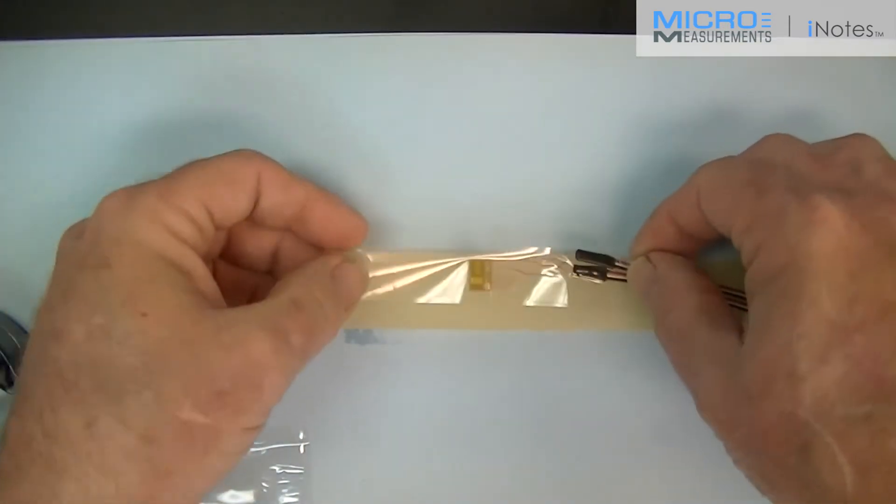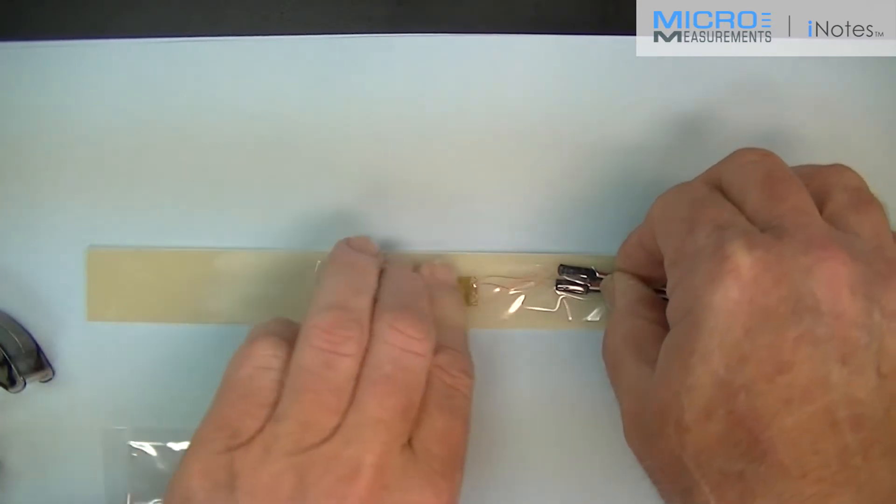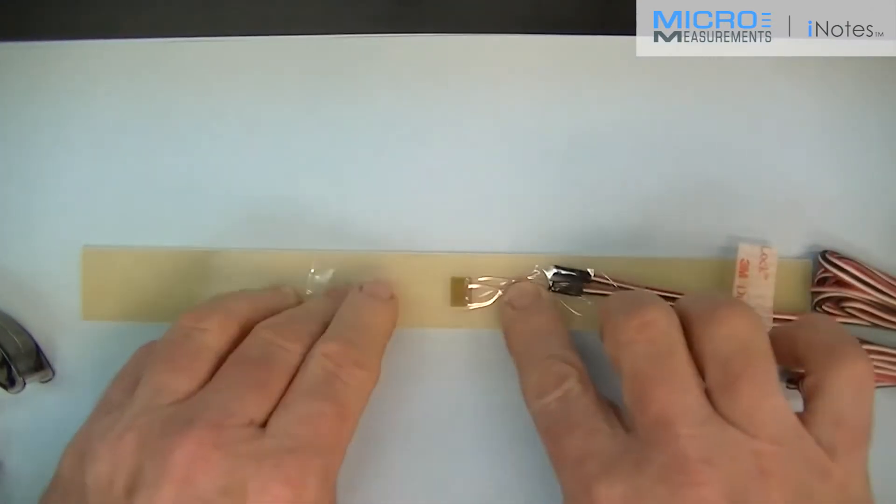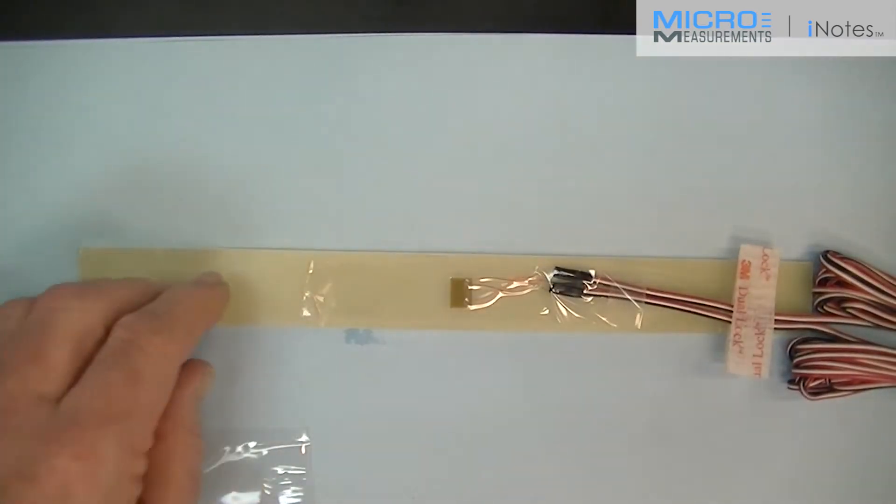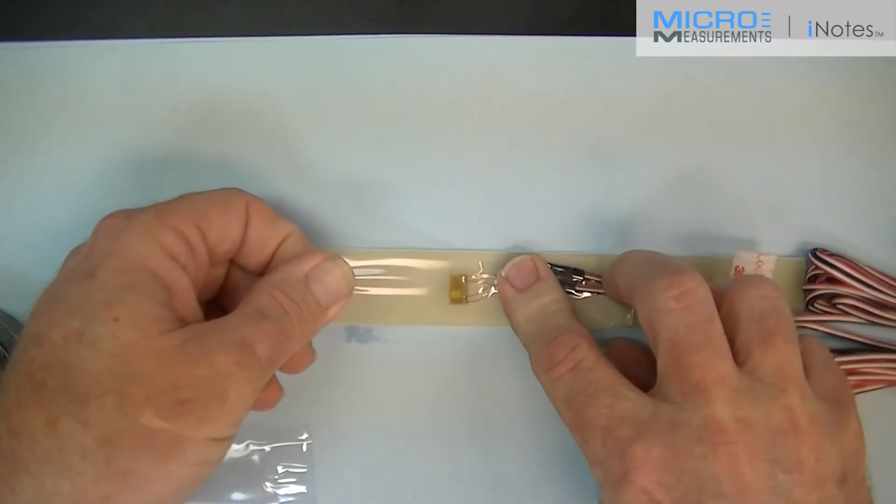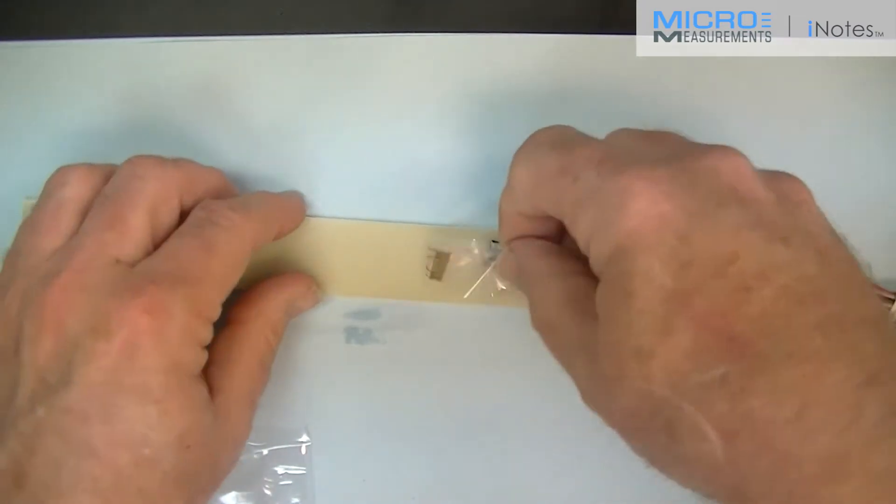I'm positioning it about midway between, because this is a standard coupon pull test. Alignment is not terribly critical. As long as you keep it straight, it's going to be straight. I'm then going to expose the bonding surface of the gauze, lifting at a shallow angle, folding it back on itself.